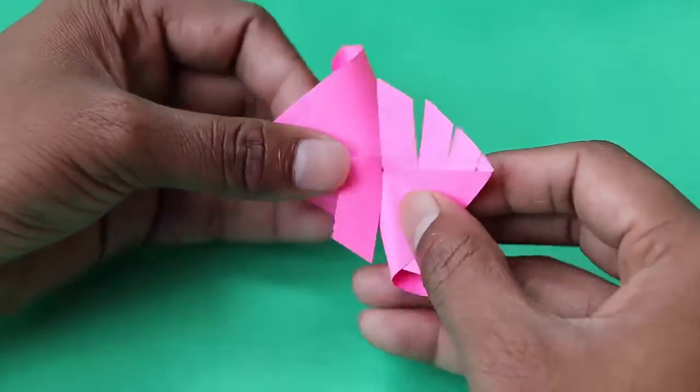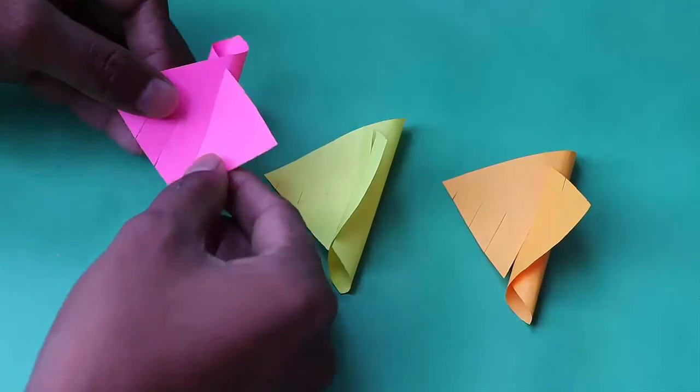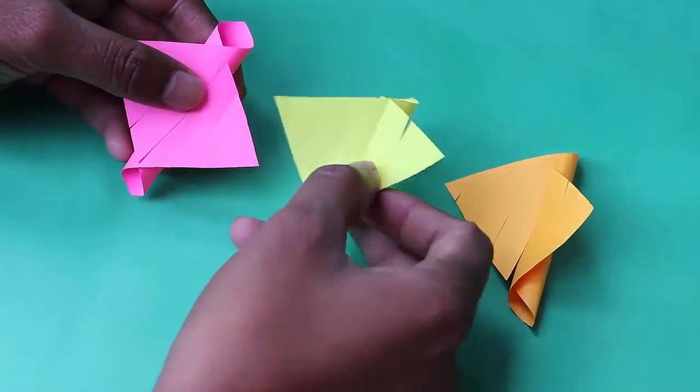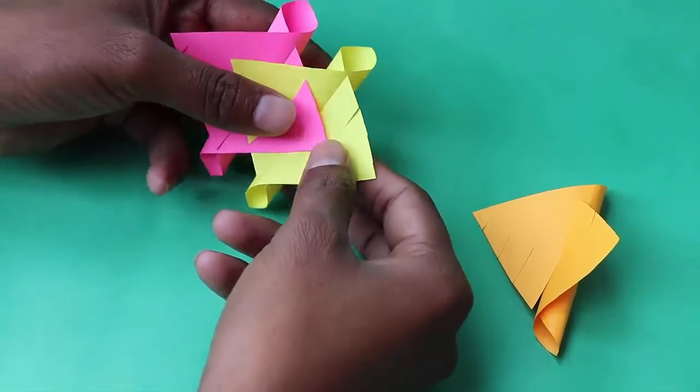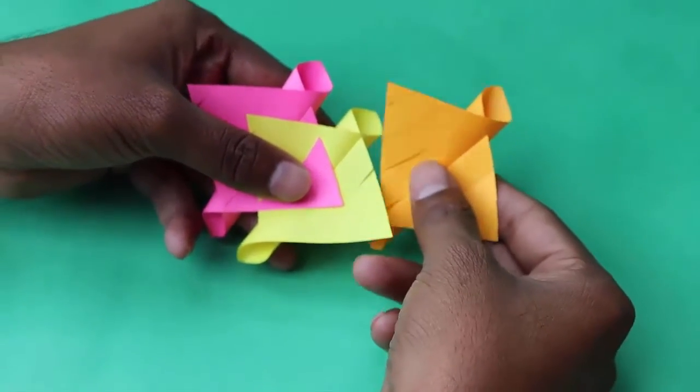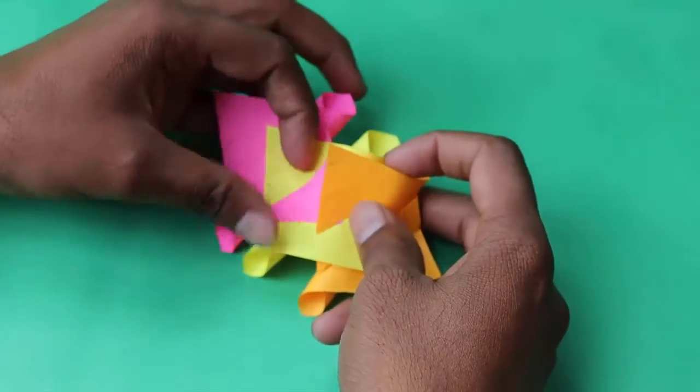Now make cylindrical tubes out of all the 12 diamonds. Then join all the 12 cylindrical tubes by interlocking their slits as shown. Here you can see the third piece being attached.